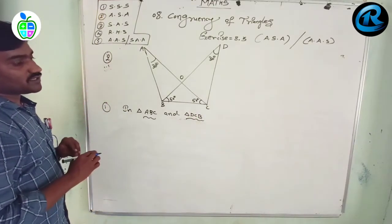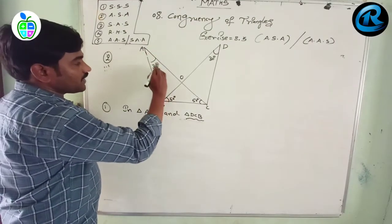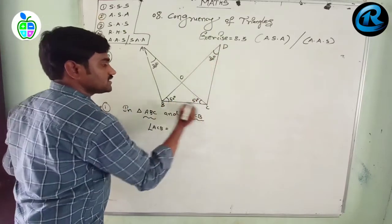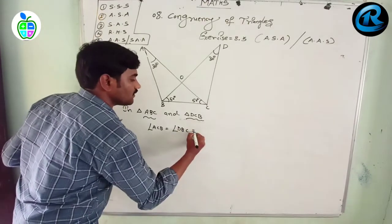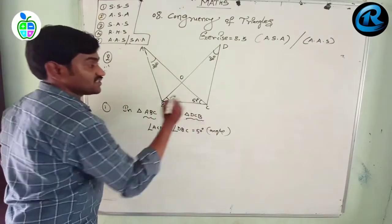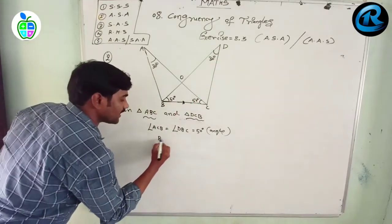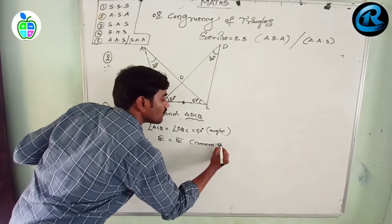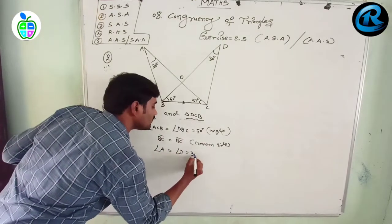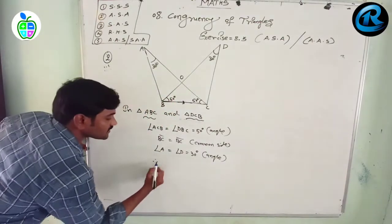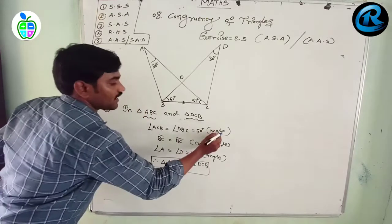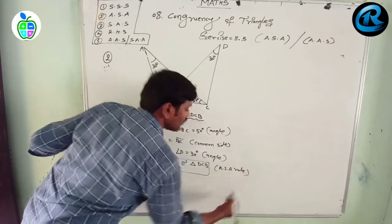In triangle ABC and triangle DCB: angle ACB equals angle DBC equals 50 degrees; BC equals BC as a common side; and angle A equals angle D equals 30 degrees. Therefore, triangle ABC is congruent to triangle DCB by the angle side angle rule.